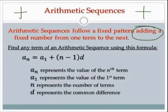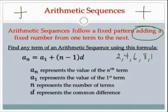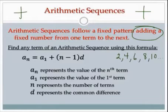If I'm adding two to a sequence, for instance: two, adding two gives four, six, eight, ten, dot dot dot — and that can go on forever.